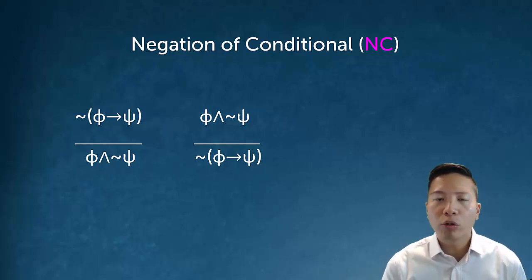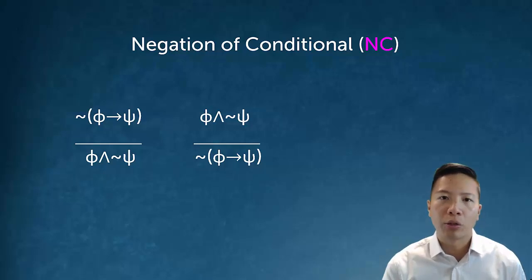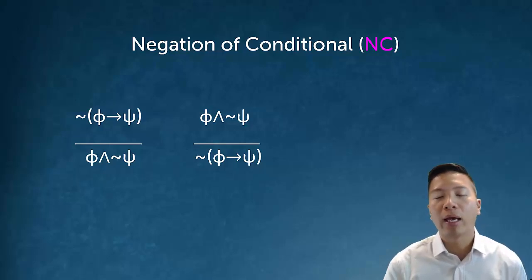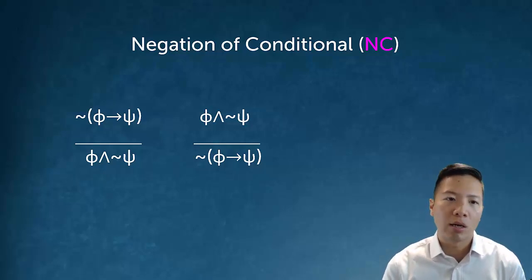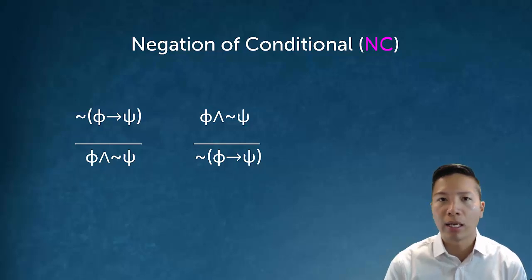Like all our rules, you can also go in the other direction. If you have phi and not psi, you can conclude negation of phi arrow psi. But this direction isn't nearly as helpful as eliminating the negation.